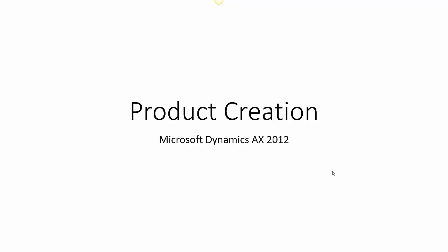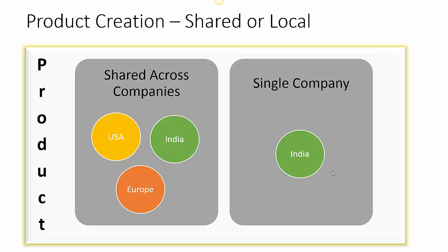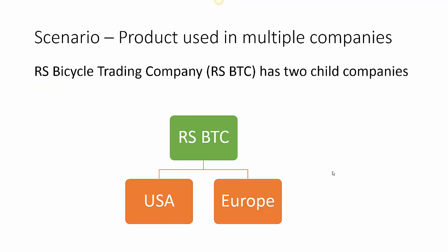In this video we will review the procedure of creating new products in Microsoft Dynamics AX 2012. Products may be shared across multiple legal entities or companies within the organization. For example, a company may have three subsidiaries like USA, India, and Europe, and the same product is sold or purchased within these legal entities. Or there may be a case that a product is only used in a specific company.